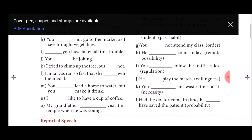M sentence: You can lead a horse to water but you can't make it drink. N sentence: I would like to have a cup of coffee. Mostly the sentence with like, we can use the word would. O sentence: My grandfather would visit this temple when he was young.